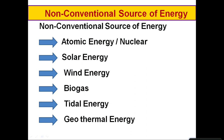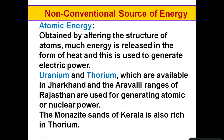The non-conventional sources of energy include atomic or nuclear energy, solar energy, wind energy, biogas, tidal energy, and geothermal energy. Atomic energy is obtained by altering the structure of atoms. When this alteration takes place, enormous energy is released in the form of heat, which is used to generate electric power.